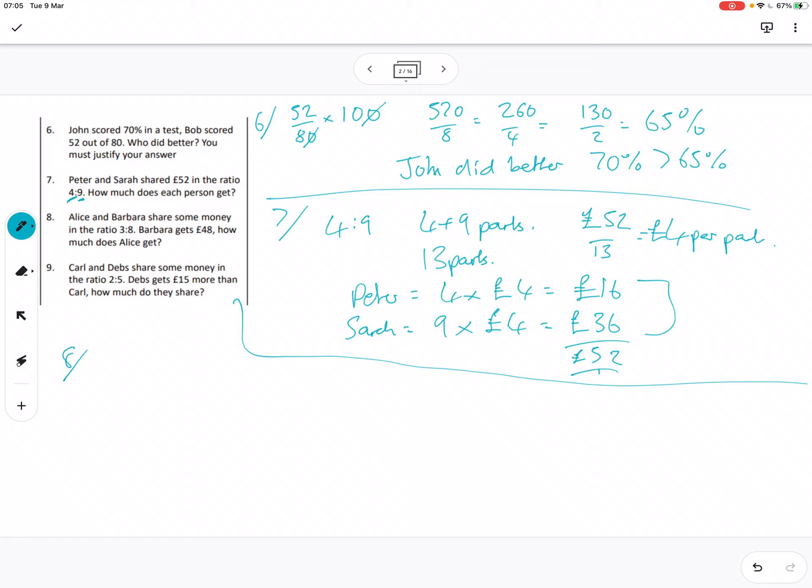Then question 8: Alice and Barbara share some money in the ratio 3 to 8. Barbara gets £48, how much does Alice get? So if we know Barbara's share, then we divide it by the number of parts that Barbara got. So £48 over 8, that's just £6 per part. And then how much does Alice get? Well Alice got 3 parts, so Alice got 3 parts times 6 equals £18.